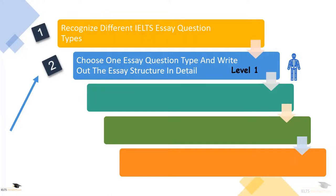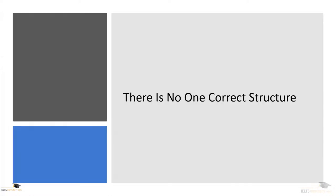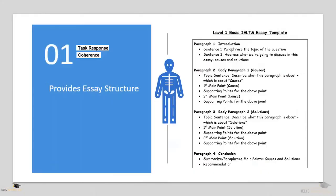Step two: choose one essay question type and write out the essay structure in detail. The focus here is to make sure your structure is good and fulfills the task response and coherence criteria, making this a Level 1 basic essay template. There's no one correct structure — IELTS doesn't tell you the way to write an essay in detail because if they did, everybody would write it the same way. That's why it's important to understand the band descriptors, because that's how examiners are going to mark your writing.